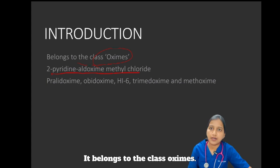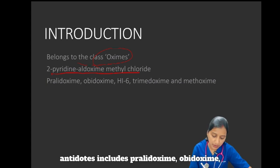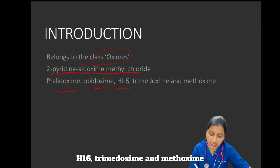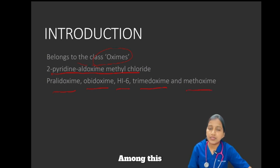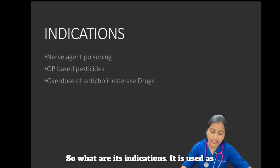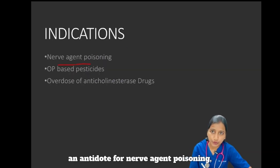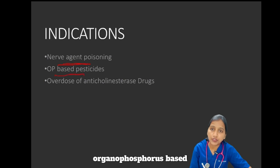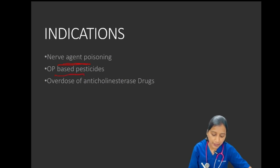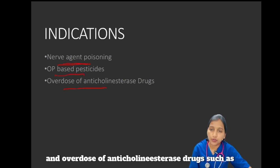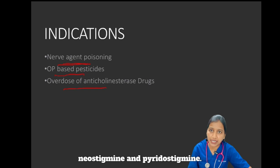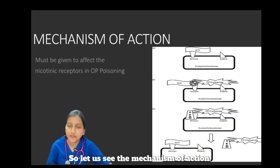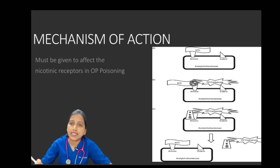It belongs to the class of oximes. Common oxime-based reactivators or nerve antidotes include pralidoxime, obidoxime, H16, trimedoxime, and methoxamine. Among these, pralidoxime is an FDA-approved drug. Its indications include use as an antidote for nerve agent poisoning, organophosphorus-based pesticides, and overdose of anticholinesterase drugs such as neostigmine and physostigmine.